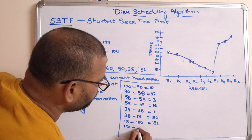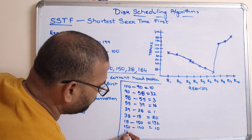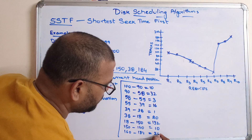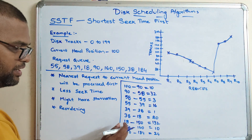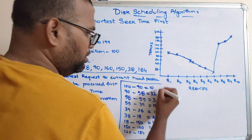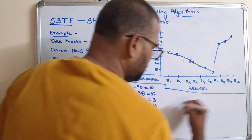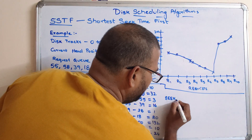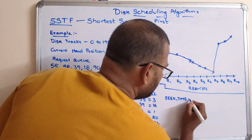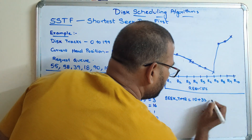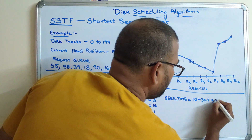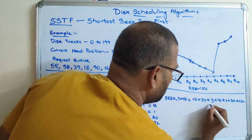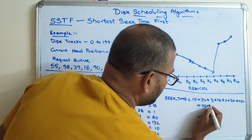From 150, it moves to 160, a difference of 10. From 160, it moves to 184, a difference of 24. Adding all the seek differences: 10 + 32 + 3 + 16 + 1 + 20 + 132 + 10 + 24 gives a total seek time of approximately 248.